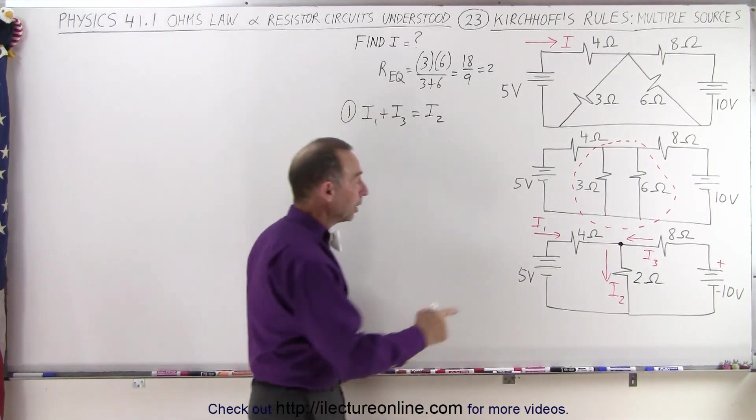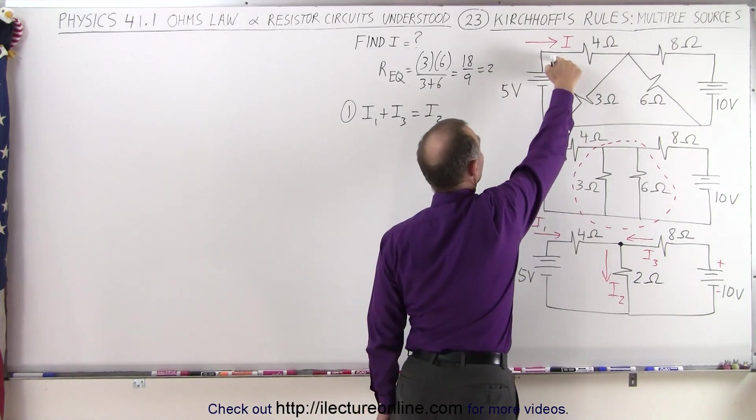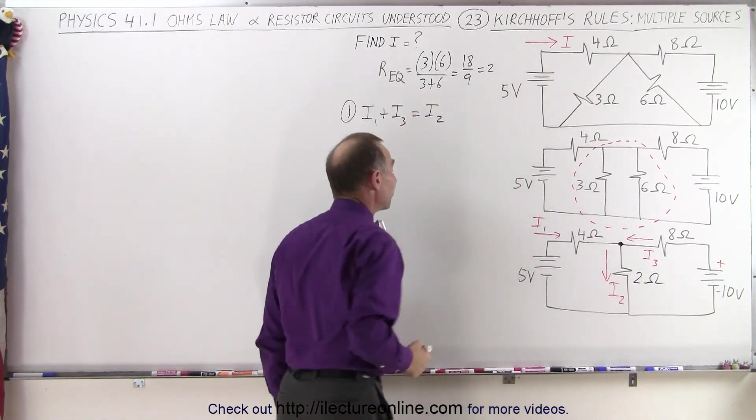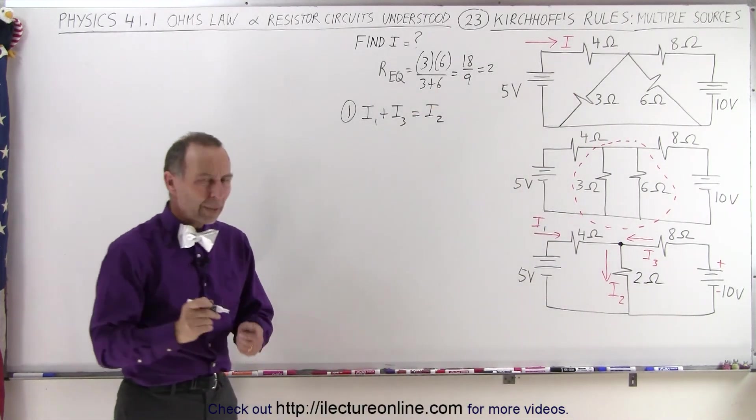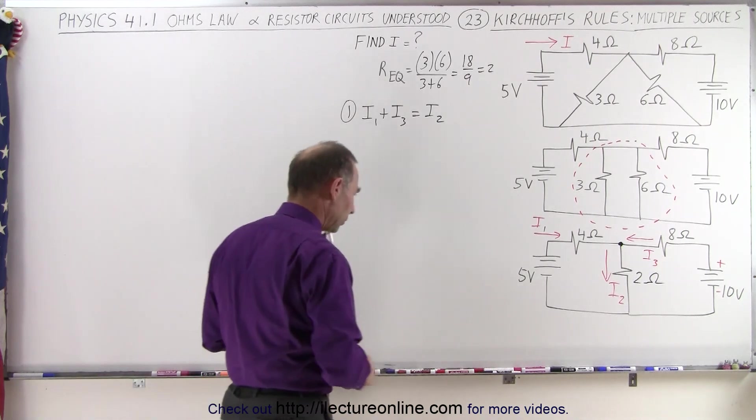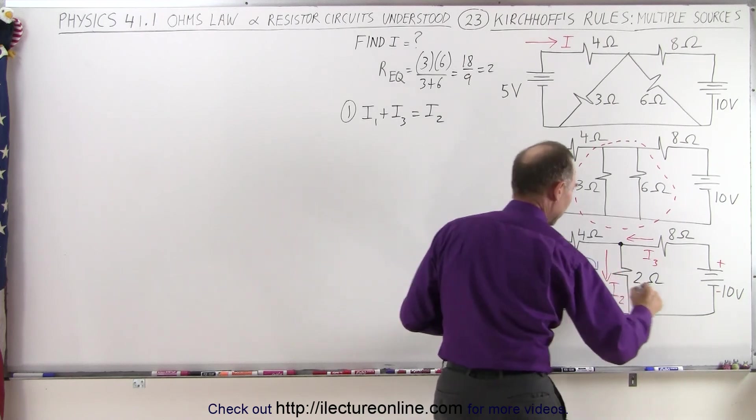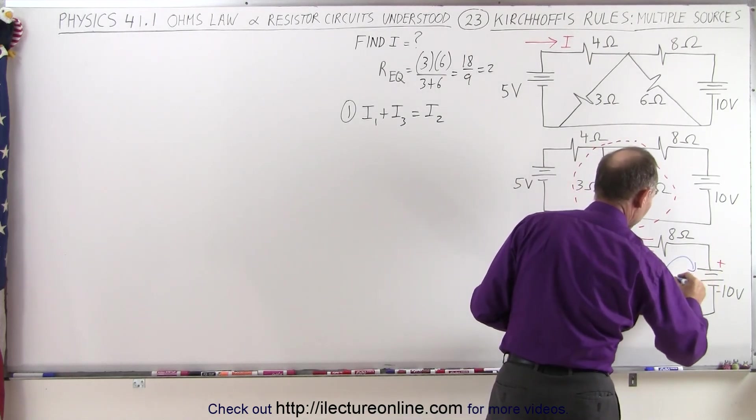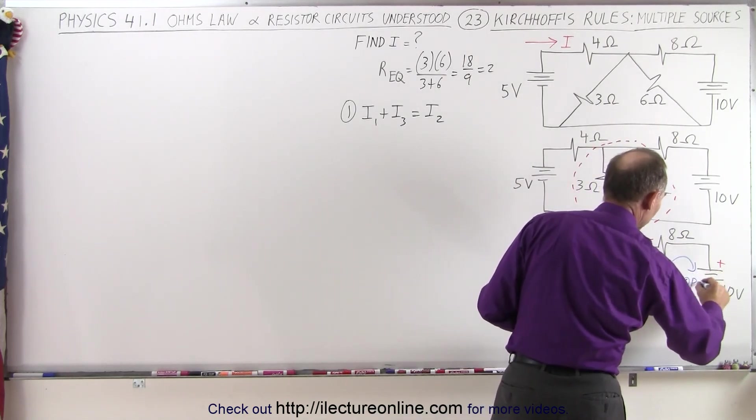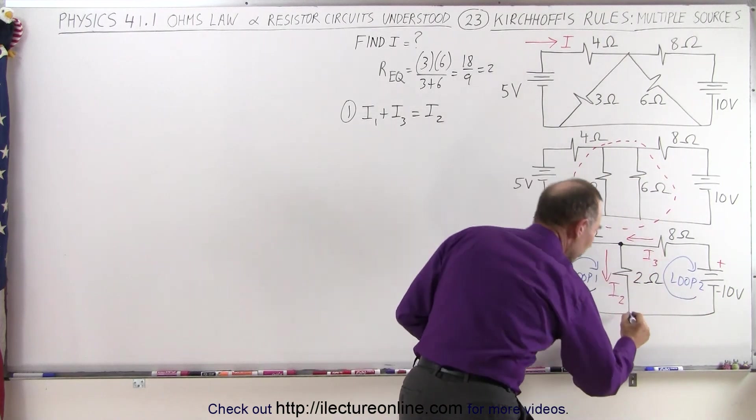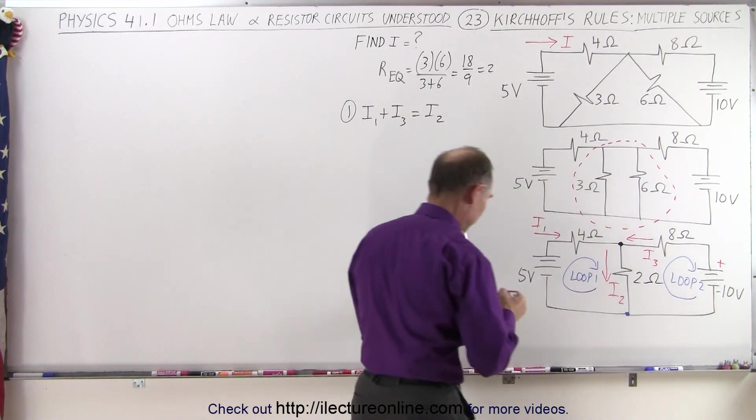Notice that I1 is the same as the current I there, so essentially I'm trying to find the value for I1. Now I need two more equations, and I'm going to need two loops for that. So let's call this loop number one, and let's call this here loop two. Notice I indicate the direction that I'm going to take as I go around the loop, and I'm going to start from the branch point right there.